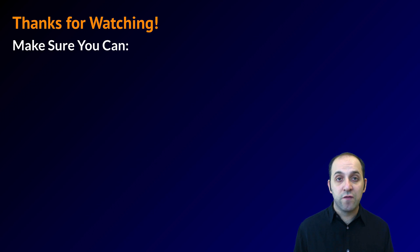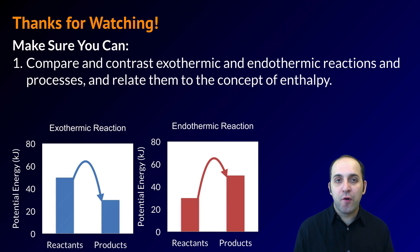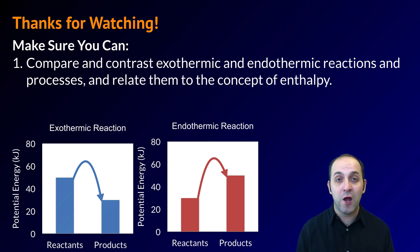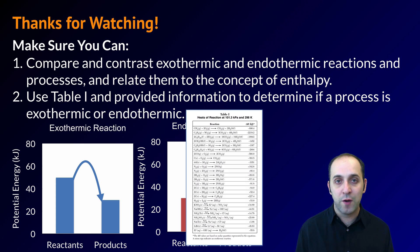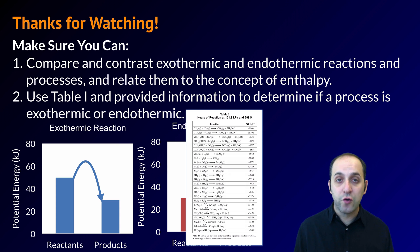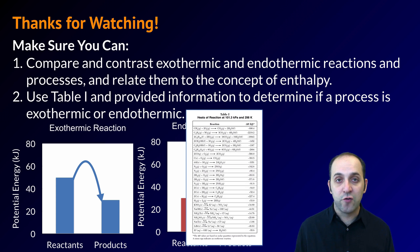Thanks for watching our discussion of chemical kinetics. Make sure you can compare and contrast exothermic and endothermic reactions and relate them to the concept of enthalpy — what's happening to the enthalpy of substances over the course of a process. Also make sure you can use Table I and provided information to determine if a process is exothermic or endothermic, and calculate how much energy is produced or absorbed. If you have questions, leave them in the comments below or get in touch. Thanks again for watching — have a great day!